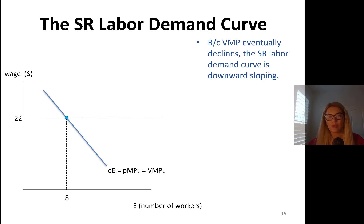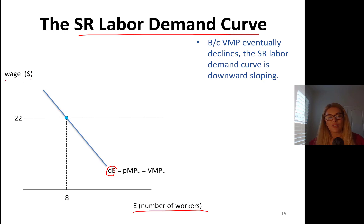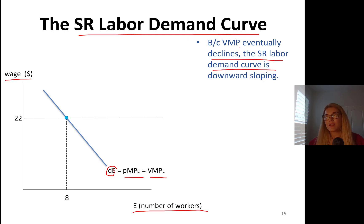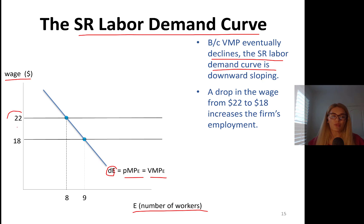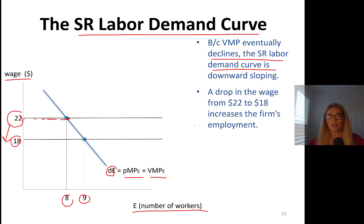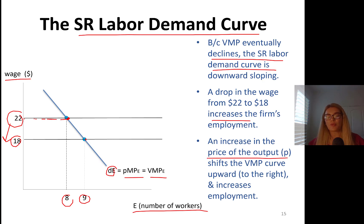The short-run labor demand curve looks like this: demand for employment — number of workers on one axis, wage rate on the other. This is that portion of the value marginal product curve, or price times marginal product of employment, that eventually declines because of the law of diminishing returns. As a result, the short-run labor demand curve is downward sloping. For instance, at a wage of $22, go hit the demand curve — eight workers are hired. If wages drop to $18, you hit the demand curve and it implies a higher number of workers, increasing the firm's employment.